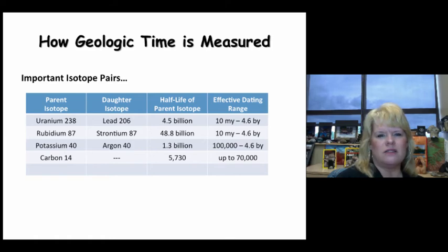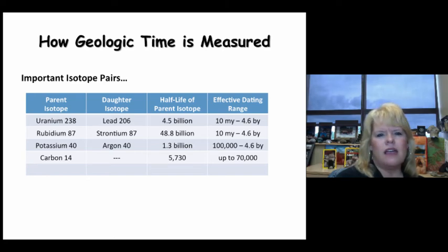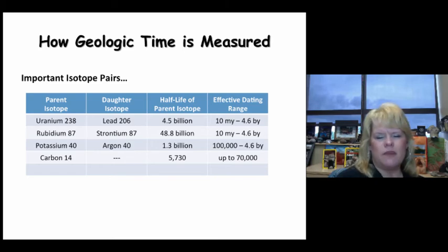By 70,000 years you've lost almost all your carbon-14 dating availability in a sample. So carbon-14 won't be used for something like a trilobite or an ammonite, but it could be used for a mammoth, a hominid, a saber-toothed cat that died 12,000 years ago, or a woolly rhinoceros that died 60,000 years ago. Anything over 70,000 years — it's just too old and there's not enough carbon to make it work.